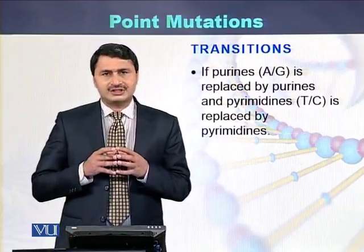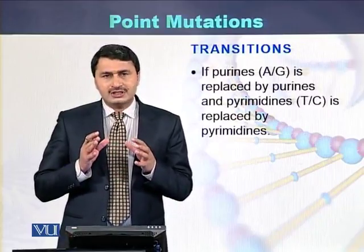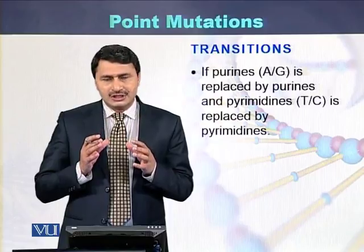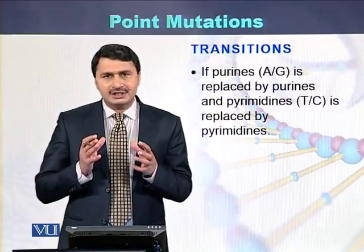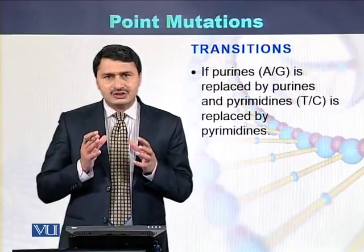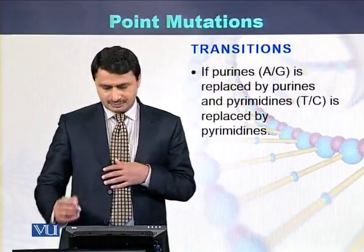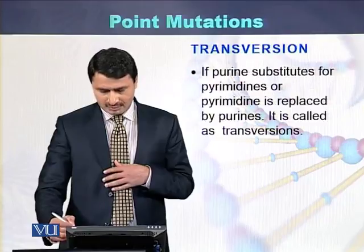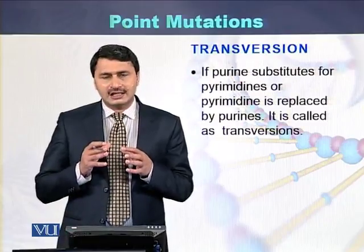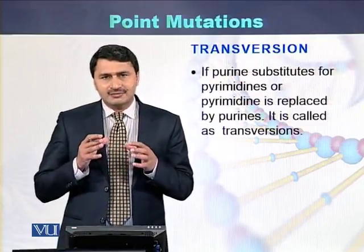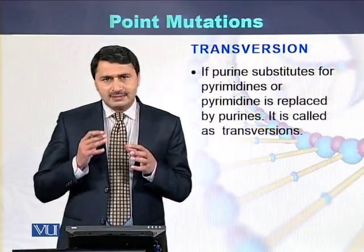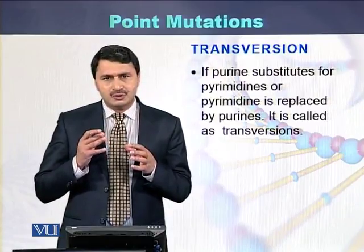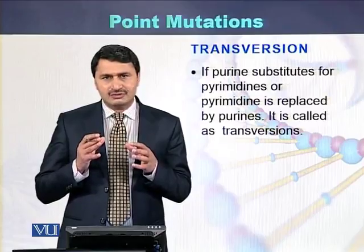Transitions occur when purines are replaced by purines and pyrimidines are replaced by pyrimidines. On the other hand, if purines are replaced by pyrimidines and pyrimidines replace purines, this phenomenon is called transversions.